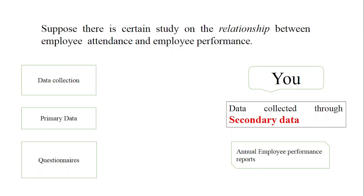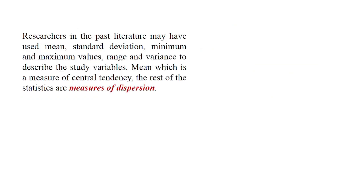In contrast, secondary data from performance reports has already been published by higher authorities, so there is no chance of bias. Therefore, using secondary data instead of primary data constitutes your methodological research gap, and you have provided the justification as well.